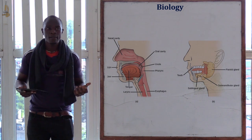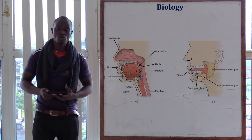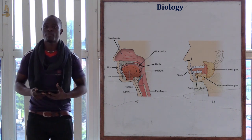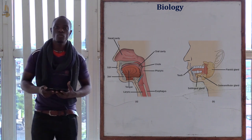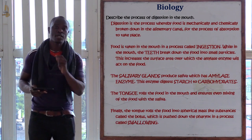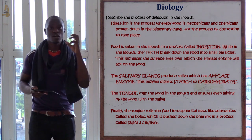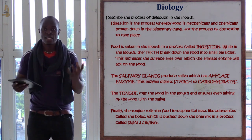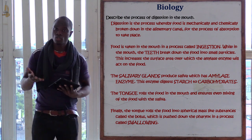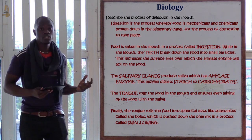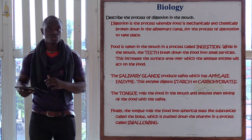For example, if you have been asked to describe the process of gaseous exchange, it is advisable to first identify the parts where gaseous exchange takes place — we have the nose, the trachea, and the lungs — and then begin describing. The same approach applies here for digestion.